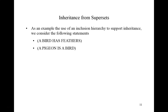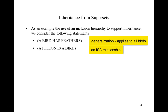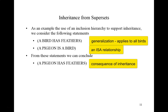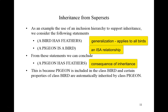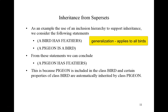Let's consider an example of an inclusion hierarchy to support the notion of inheritance. First, we say that a bird has feathers. Then, we note that a pigeon is a bird. So we start off with a generalization about all birds, and then we use ISSA to define that a pigeon is a bird. Hence, what we can deduce is that a pigeon has feathers — and that's the benefit of inheritance. We can make this conclusion because a pigeon is included in the class of bird, and certain properties of the bird class will then be automatically inherited by the pigeon.